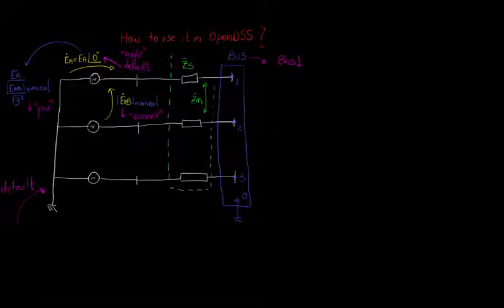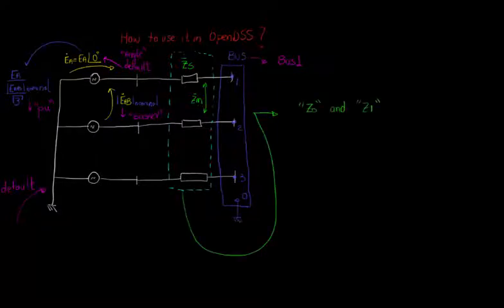And finally, as mentioned before, we cannot describe this element with ZS and ZM. These parameters are implicitly defined with one of the pairs: Z0 and Z1, ISC3 and ISC1, and MVASC3 and MVASC1.